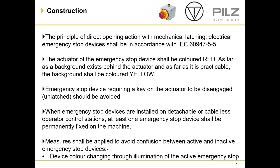Measures shall apply to avoid confusion between active and inactive emergency stop devices — the device should colour change through illumination of the active emergency stop. Emergency stops are no longer permitted to have writing on the yellow background but must display the Euronorm signal for emergency stop. Wireless emergency stops could potentially be taken away from the machine; if wireless emergency stops are used, then a hardwired emergency stop must always be available so someone else in the danger zone can access it. If the wireless e-stop leaves its operational zone, this must be indicated via a blinking light or change of colour.